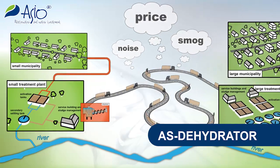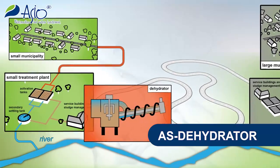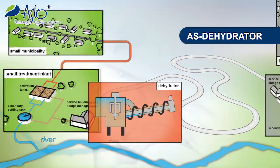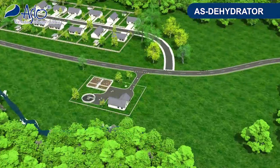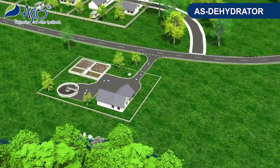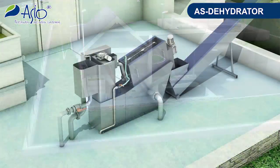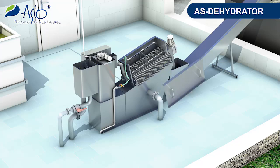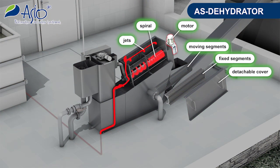AS Dehydrator, the equipment offered by our company, is suitable for wastewater treatment plants with a capacity starting as low as several hundreds of the population equivalent. The sludge dewatering process, which is the core of the AS Dehydrator, features automatic operation with low operating costs.